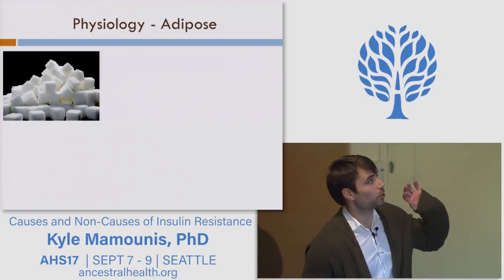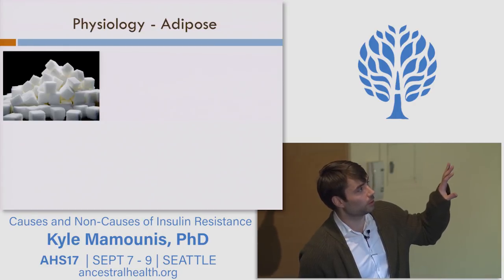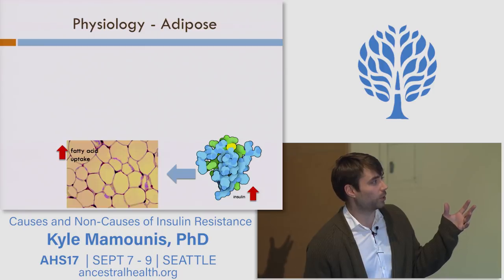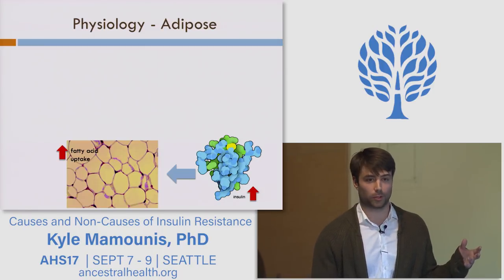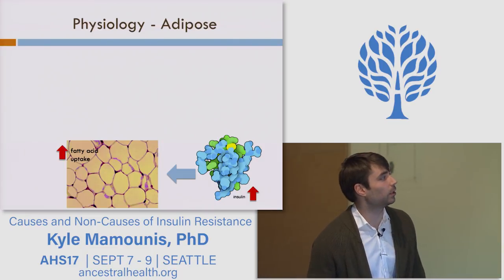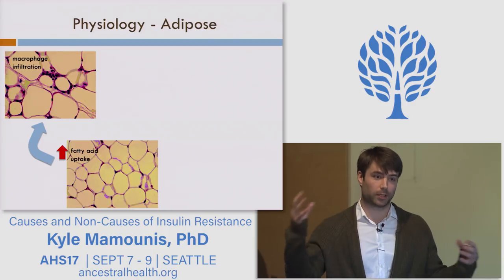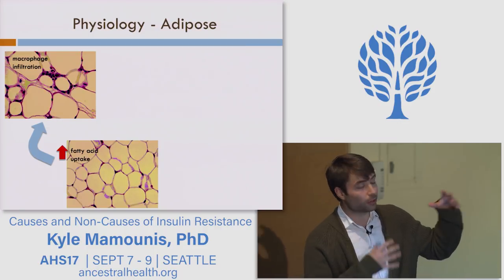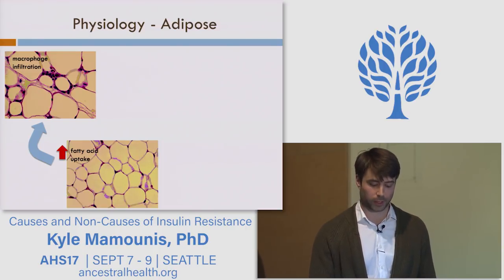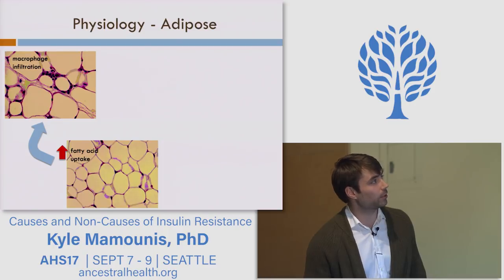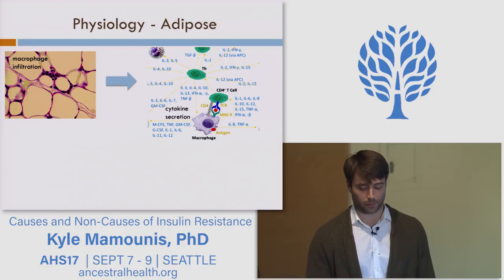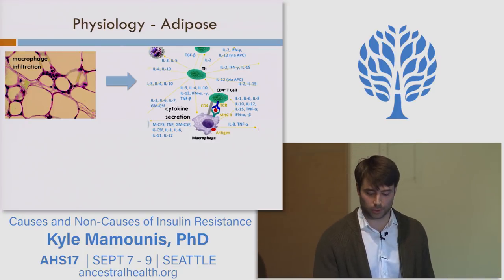At the level of the adipose, going through a simple model: sugar raises blood sugar, which raises insulin, which causes fatty acid uptake in adipocytes. Researchers found that macrophages get into the interstitial tissue of adipocytes and start becoming active, secreting all kinds of cytokines — inflammatory proteins that are pretty much directly causal of insulin resistance. That's where the peripheral inflammation story comes from.